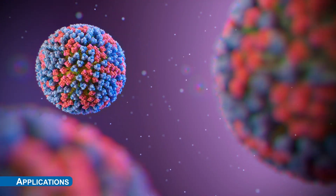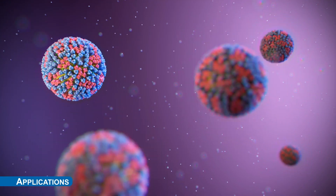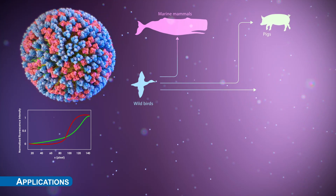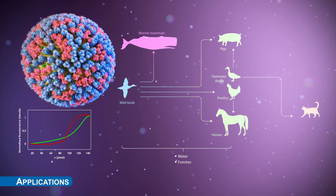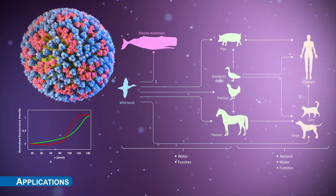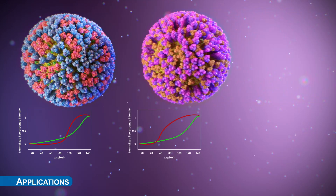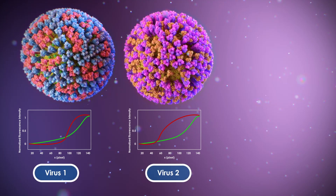With a better understanding of receptor recognition, we can better predict which cells and which host an influenza virus infects, and quickly assess the zoonotic potential of a new emerging virus to take the right preventative measures.